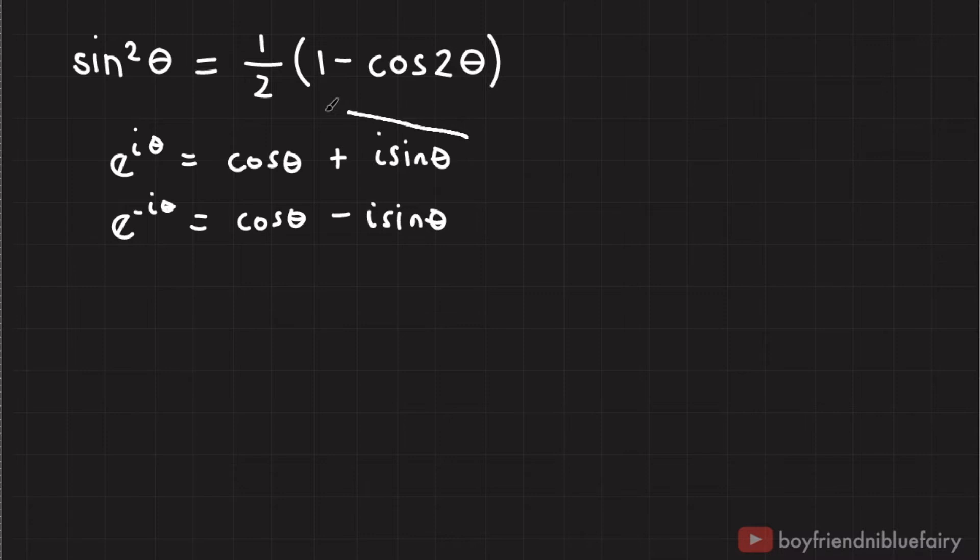Now, if I subtract the original equation from this second equation, I'll get the following relationship. E to the i theta minus e to the negative i theta equals zero, and i sine theta plus i sine theta equals 2i sine theta.